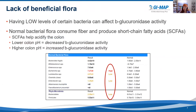The second reason that can contribute to high beta-glucuronidase activity is a lack of beneficial flora. Normal bacterial flora consume fiber and produce short-chain fatty acids, and short-chain fatty acids help acidify the colon. Research shows that lower colonic pH is associated with decreased beta-glucuronidase activity, and higher colonic pH is associated with increased beta-glucuronidase activity. Therefore, if there's a lack of short-chain fatty acid producers, there could be a higher colonic pH and increased beta-glucuronidase activity.